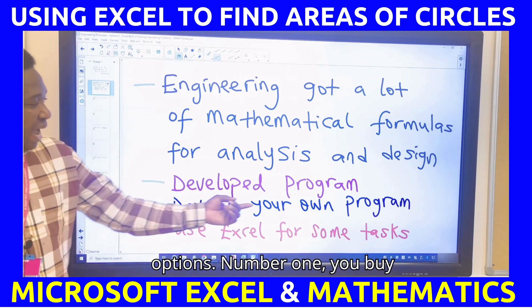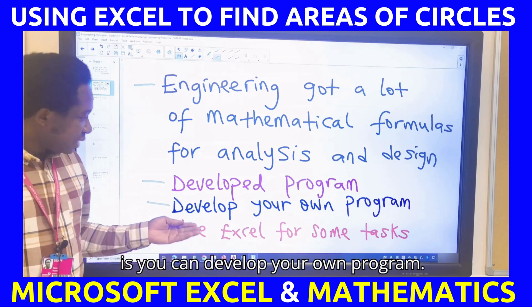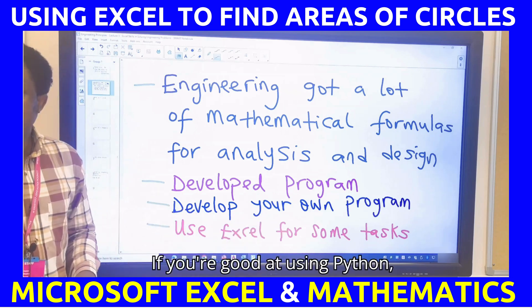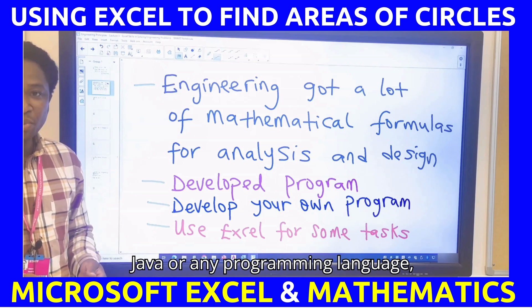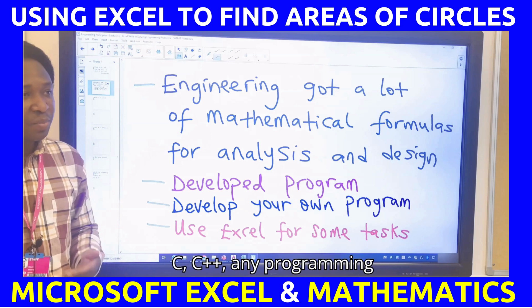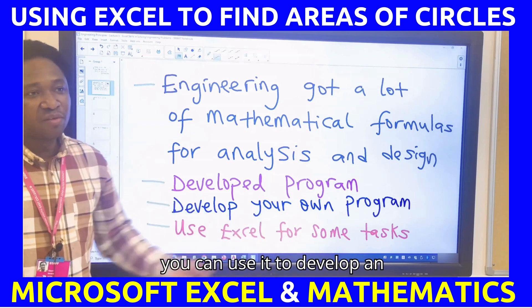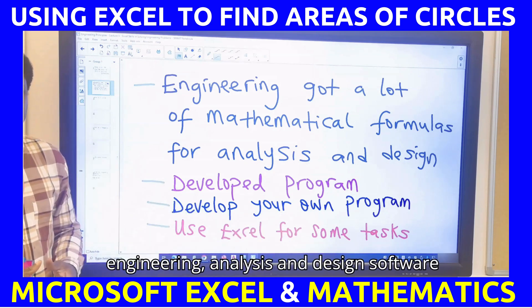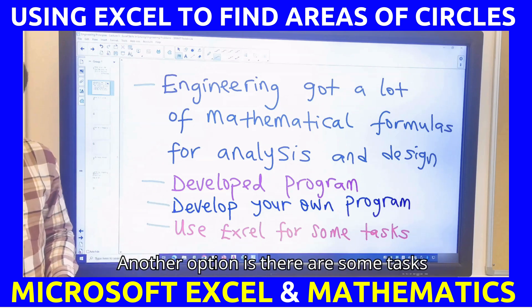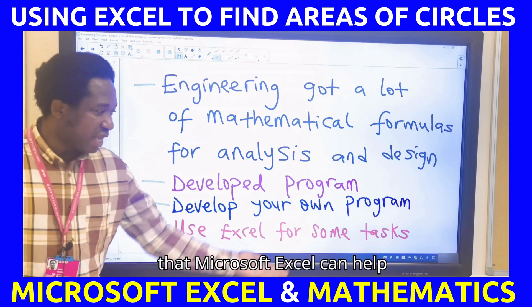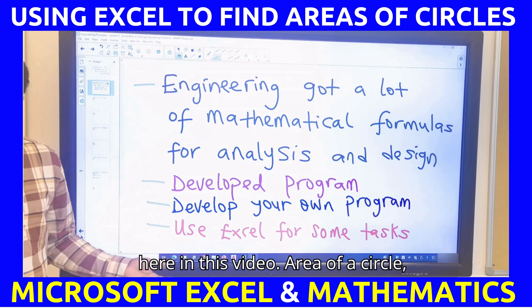Number one, you buy developed programs. Another option is you can develop your own program. If you're good at using Python, Java, or any programming language, C, C++, any programming language that you're comfortable with, you can use it to develop an engineering analysis and design software, either for yourself or for your company. Another option is there are some tasks that Microsoft Excel can help us to solve, which we're going to see here in this video.